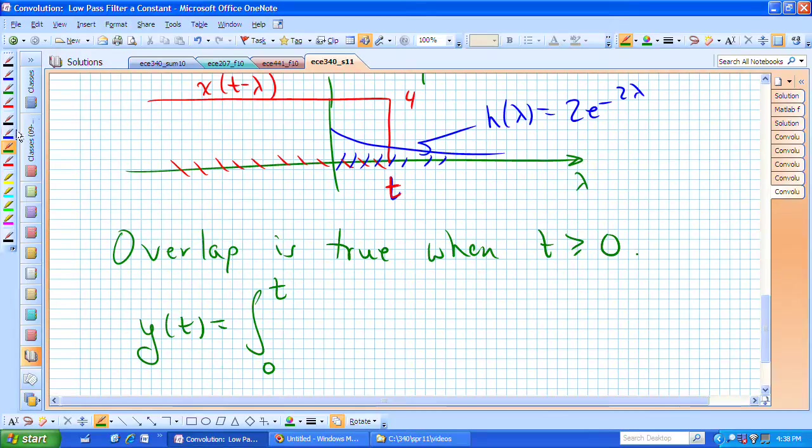Now we can plug in our integrand. We have 4 for x of t minus lambda, and we have 2 e to the minus 2 lambda d lambda for our impulse response waveform.